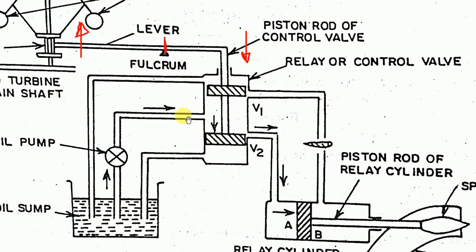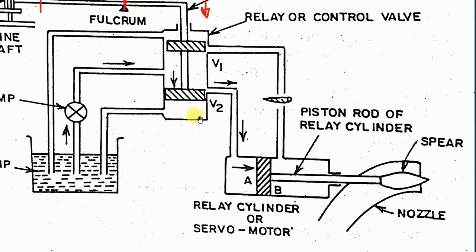The oil flows to V2 because the pistons have moved down. The oil enters into zone A — the left side portion of the servo cylinder piston. When the oil enters that portion, the force on the piston increases, and as the force on the piston increases, the spear is pushed into the nozzle. When the spear is inserted into the nozzle, the area available for water flow is reduced, so less water goes to the turbine, and the turbine speed reduces.